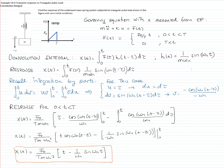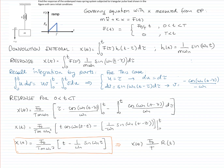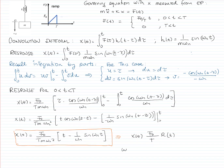This is the response for time between zero and capital T. Substituting m·omega_n squared by k, we can write it as f_0 over T times the response to a ramp from theory, which equals (1/k) times [t minus (1/omega_n)·sine(omega_n·t)].